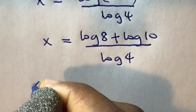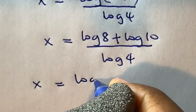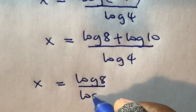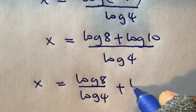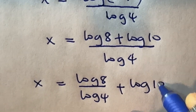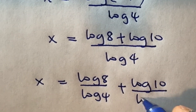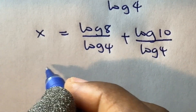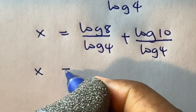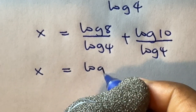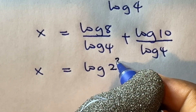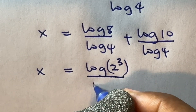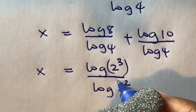Therefore, x becomes log 8 divided by log 4, plus log 10 divided by log 4. I can express log 8 as log 2 raised to power 3, and express log 4 as log 2 raised to power 2.